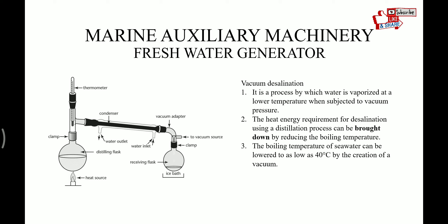The basic principle on which the freshwater generator works on board ship: there are two principles — one is vacuum desalination and the other is reverse osmosis. In the vacuum desalination process, water is vaporized at lower temperature when subjected to vacuum pressure. The heat energy required for desalination using a distillation process can be brought down by reducing the boiling temperature. The boiling temperature of sea water can be lowered as low as 40 degrees by creation of vacuum. As we reduce pressure, the boiling point of water decreases, consuming very less energy, and this can be used to produce water on board ship. The energy from jacket cooling water is used on board ship for this purpose.